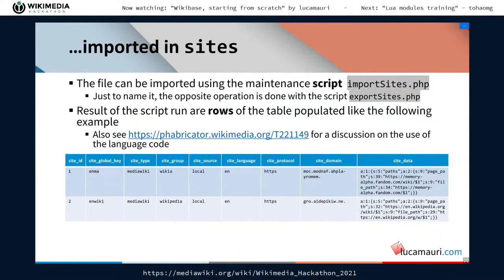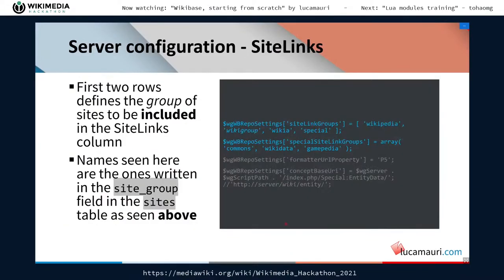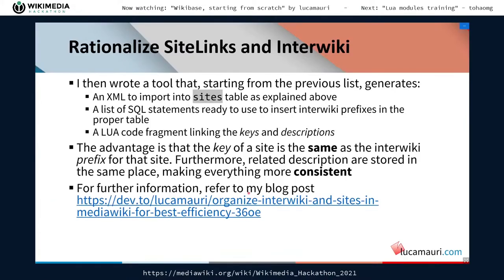Everything runs with the name of the site, the group to which the site belongs, and the configuration of the sites table. This is the most important setting in the configuration of a Wikibase instance — server and client — because it is the configuration that allows the exchange of data with direct access. If you want to go deeper on how to configure site links and interwiki — which in my tests I discovered is worth treating as a single concept — you can read a blog post I wrote on dev, which I reference here.